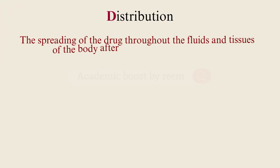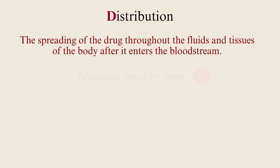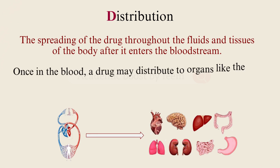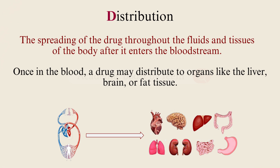Distribution is the spreading of the drug throughout the fluids and tissues of the body after it enters the bloodstream. So once the drug is in the blood, it may distribute to organs like the liver, brain, and fat tissues.